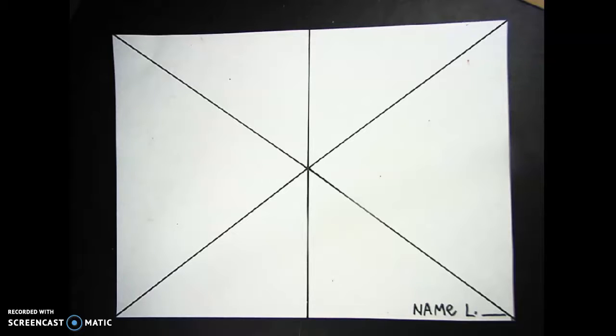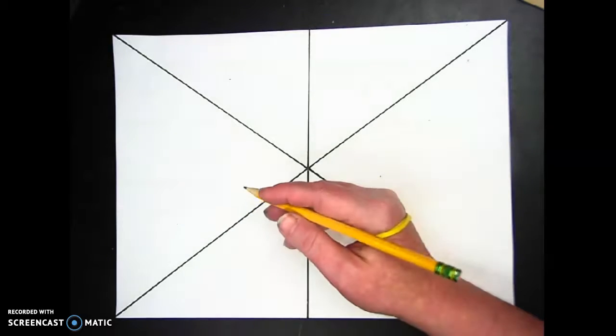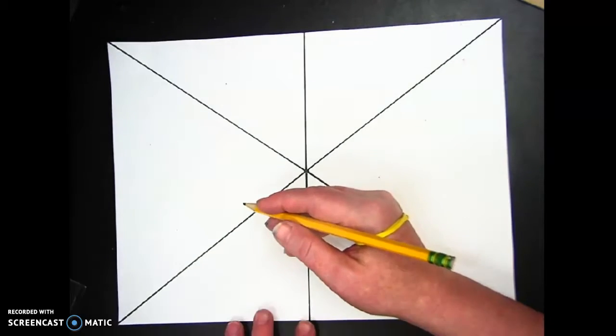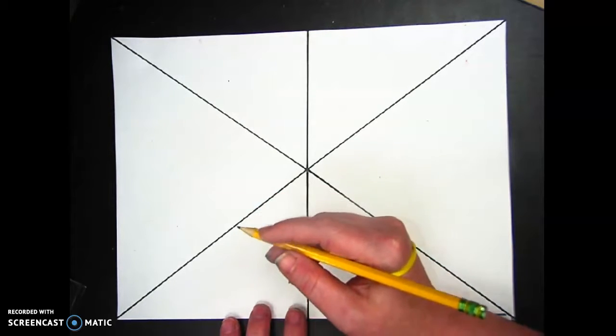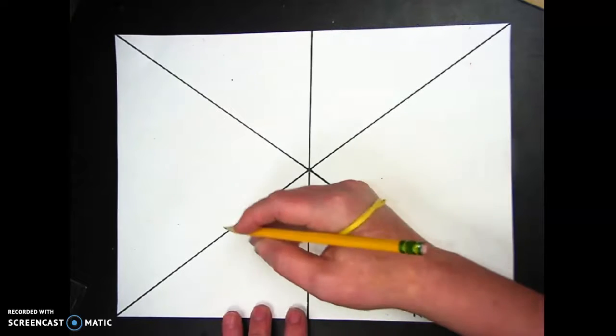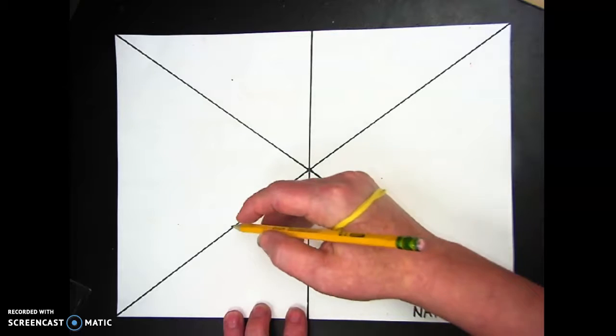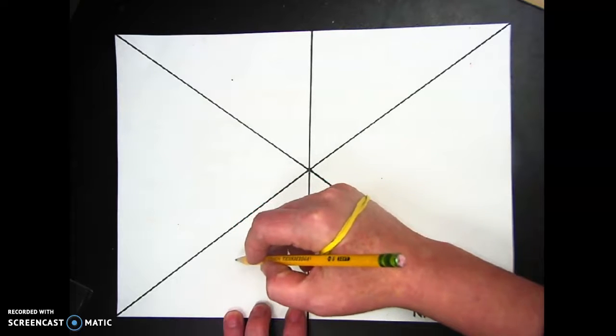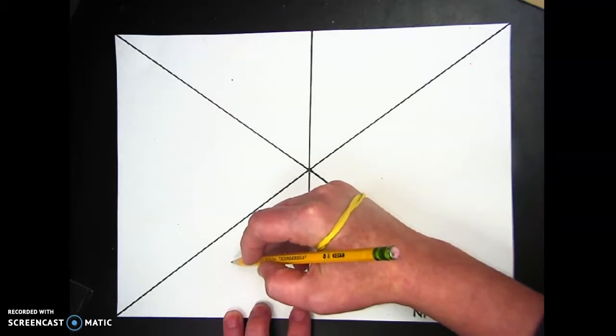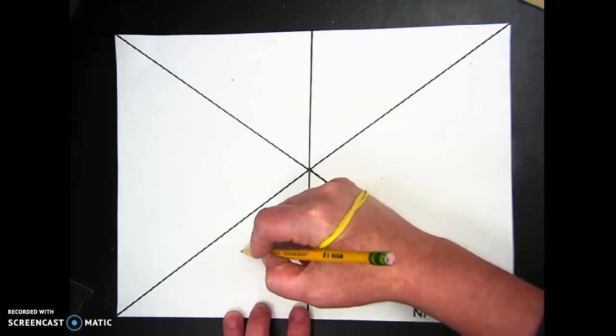The next thing we're going to do is create our block or bubble letters. We're going to do this by drawing lightly. I'm going to pick a word, six letters or less, something that I'm attached to. I'm going to pick the word 'chip' - that's the name of our classroom pet.